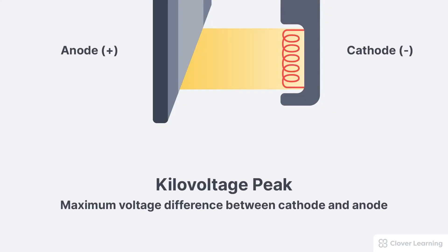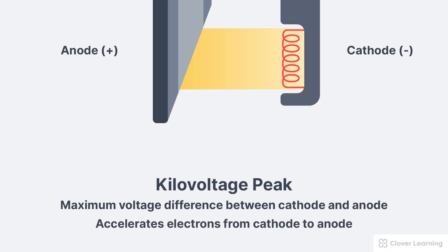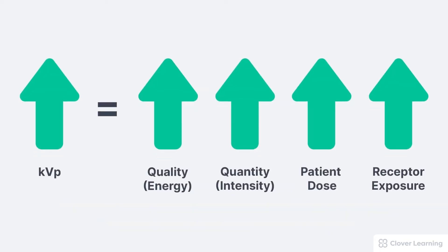So let's review. Kilovoltage peak, or KVP, describes the maximum voltage difference between the cathode and anode during the x-ray exposure. KVP is responsible for accelerating electrons from the cathode to the anode. If we increase the KVP, this will increase the x-ray beam quality — that's the energy — increase the x-ray beam quantity — that's the intensity or number of photons — increase the patient dose, and increase the receptor exposure. These relationships are true when only the KVP is changing, using a fixed technique that's not AEC, and no other variables are changing.